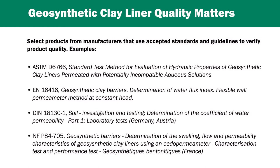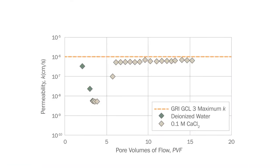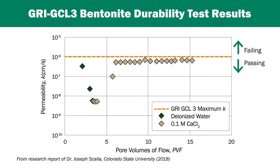These globally accepted, peer-reviewed test methods and guidance documents assist the designer and ensure the purchaser and project owner that they've received a first-rate quality product, one that will provide the expected performance. In example, let's look more closely at the use of two of these quality-confirming resources, the GRI-GCL3 specification and ASTM D6766.